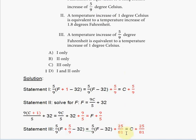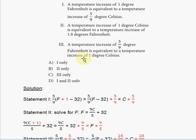So the new temperature in Celsius increases by 25/81 of a degree — not one degree as statement three claims. Therefore statement three is incorrect. Only statements one and two are correct, giving us answer choice D.